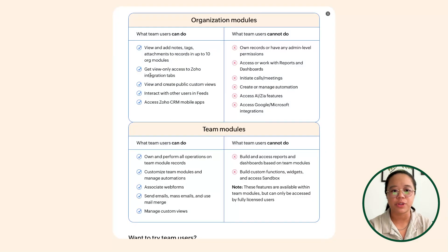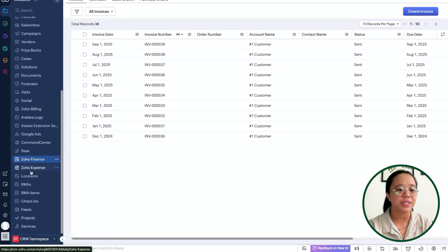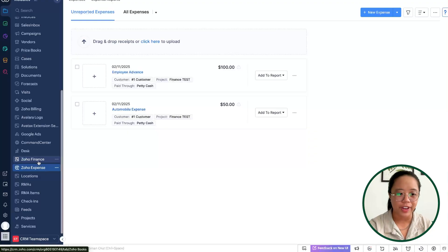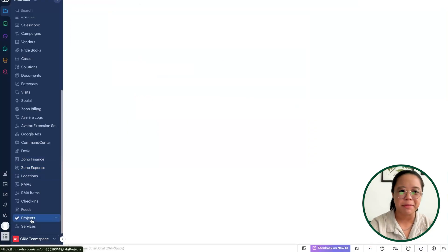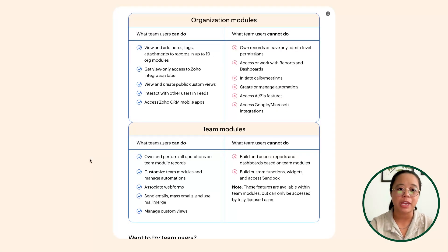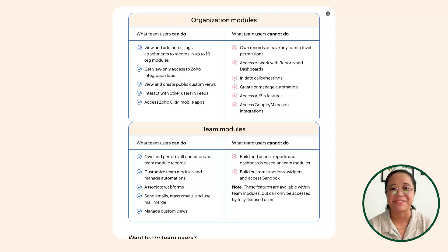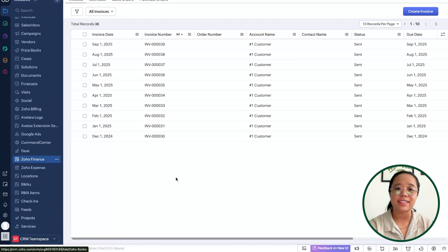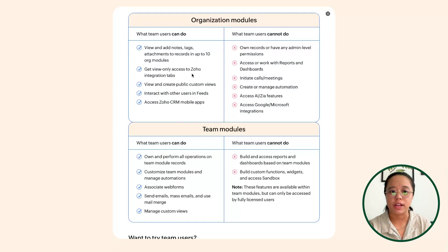A good example of this would be the Zoho Finance integration. If you have Zoho Finance integrated with your Zoho CRM, then you'll have the Zoho Finance module available — essentially an embed of Zoho Books. Zoho Finance, Zoho Expense, and Zoho Projects are examples of integrated Zoho applications within the CRM. Team users will get view-only access to any of those integration tabs. For example, letting outside sales see any projects related to those leads or checking if a lead already had a quote related to them.